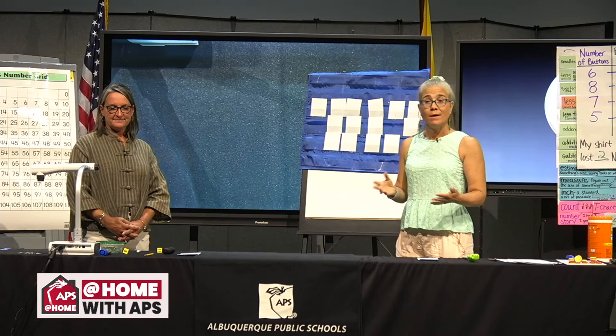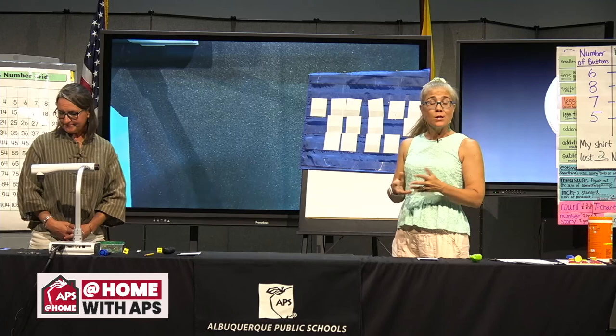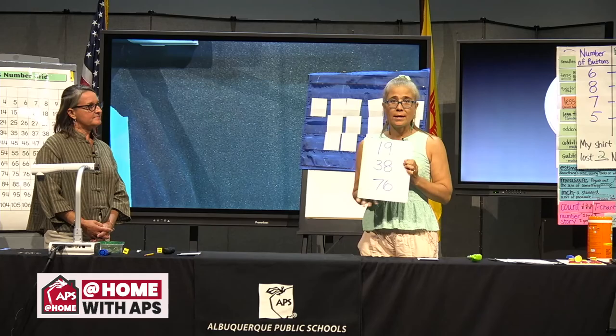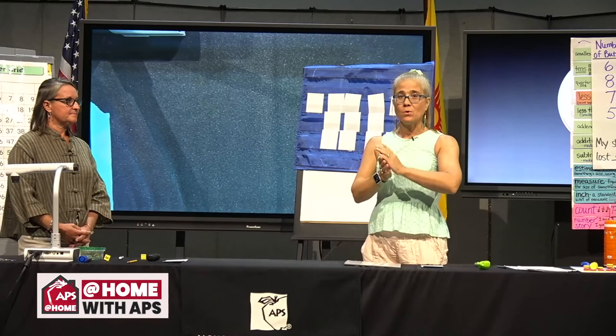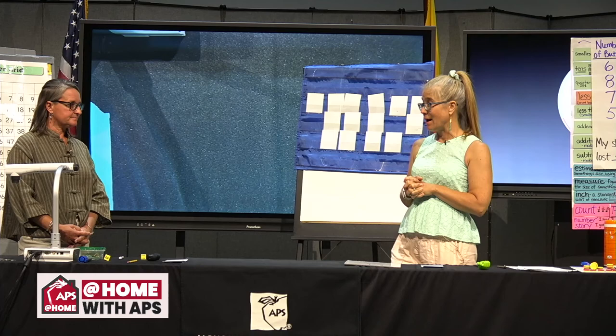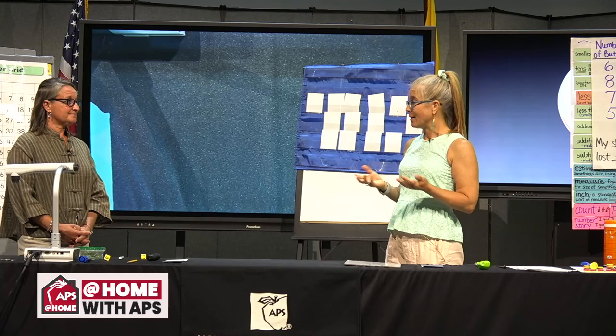Let's remember what we did today: we did our calendar, and your counting jar assignment is either 19, 38, or 76 things. You can fold paper into four and make different representations for eight. We played the cover-it-up game — you can practice adding and subtracting with that, and there are 10 frames to help you out. We read a button story, and we've got this counting game for you to practice. We hope you get some extra practice, and we thank you for joining us today for At Home with APS.